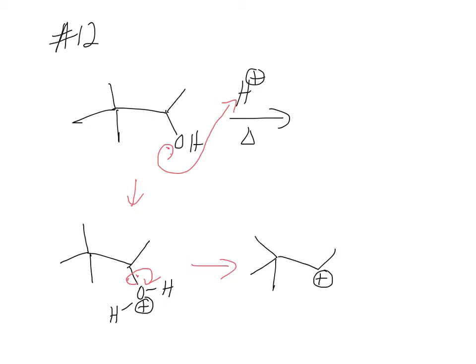At this point you should have already been numbering your carbons. Secondary carbocation — can we make it a more stable carbocation? How are we going to do that? Not a hydride shift, a methyl shift. Show those two electrons moving. So where is the plus charge now? Carbon 3 — 1, 2, 3, 4, 5, 6.